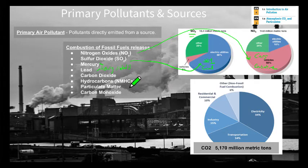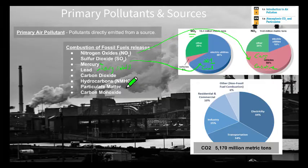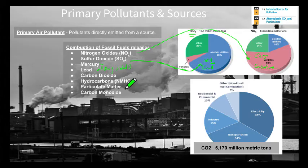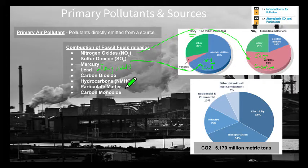Particulate matter and carbon monoxide are the last primary pollutants. Particulate matter refers to particles left in the air from combustion of coal, oil, natural gas, and diesel — diesel is dirtier and can release soot into the environment. There are two types: PM10, smaller than 10 micrometers, and PM2.5, smaller than 2.5 micrometers. These are really bad for respiratory systems, causing premature death and lung issues.